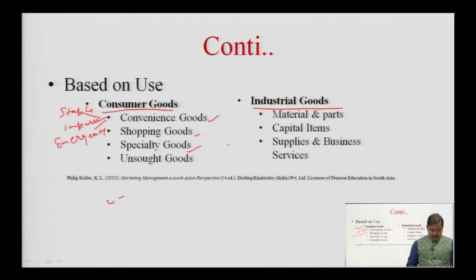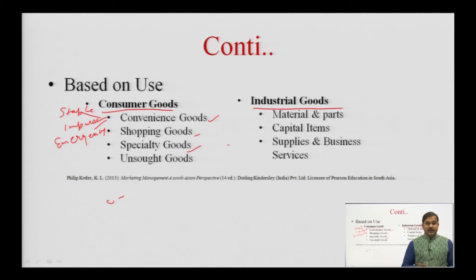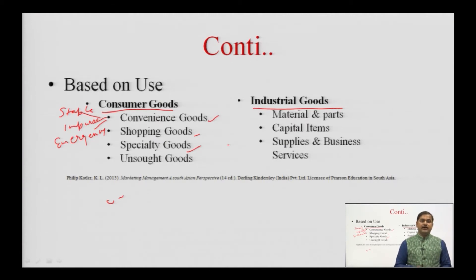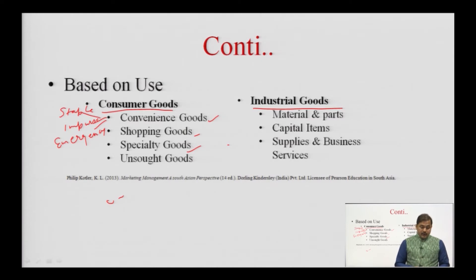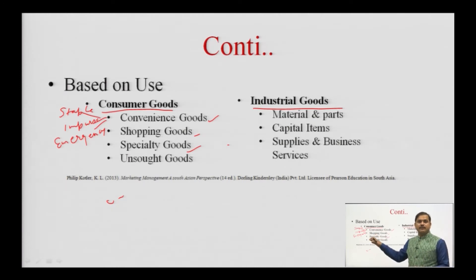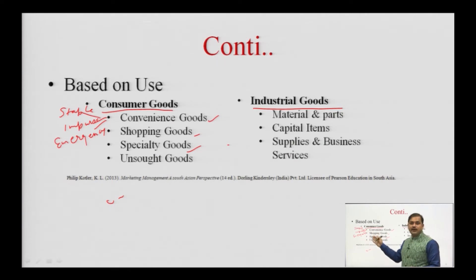The last consumer goods category is unsought goods. Consumers normally do not know they have a need for these products, but once approached through personal selling, they do buy. Examples include insurance and encyclopedias sold by personal sellers. Initially we feel no need for them, but once approached effectively, we go ahead and buy.